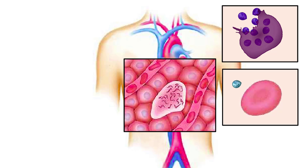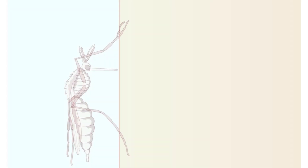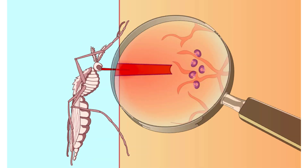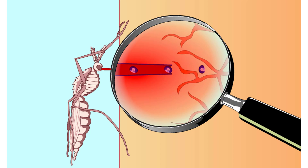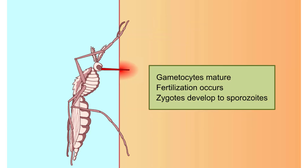In some red blood cells, merozoites develop into sexual forms called gametocytes. When a female mosquito feeds on an infected person, she sucks up gametocytes along with the blood. Inside the mosquito's gut, the gametocytes mature into gametes. Fertilization forms zygotes that develop into sporozoites. The sporozoites migrate to the mosquito's salivary glands, and the cycle of infection is now ready to begin again.